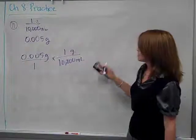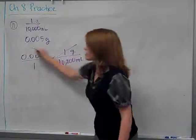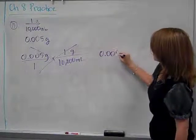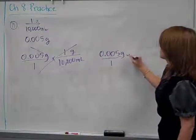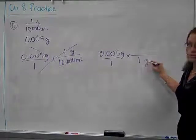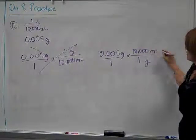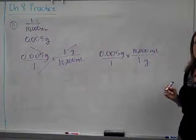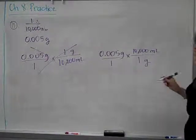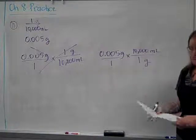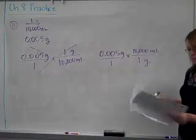So, it makes no sense to leave it as is, so that's not going to work. What is going to work is if I say one gram on the bottom and 10,000 milliliters on top. And then I would have basically 5 thousandths times 10,000. And this is going to give me an answer in milliliters.